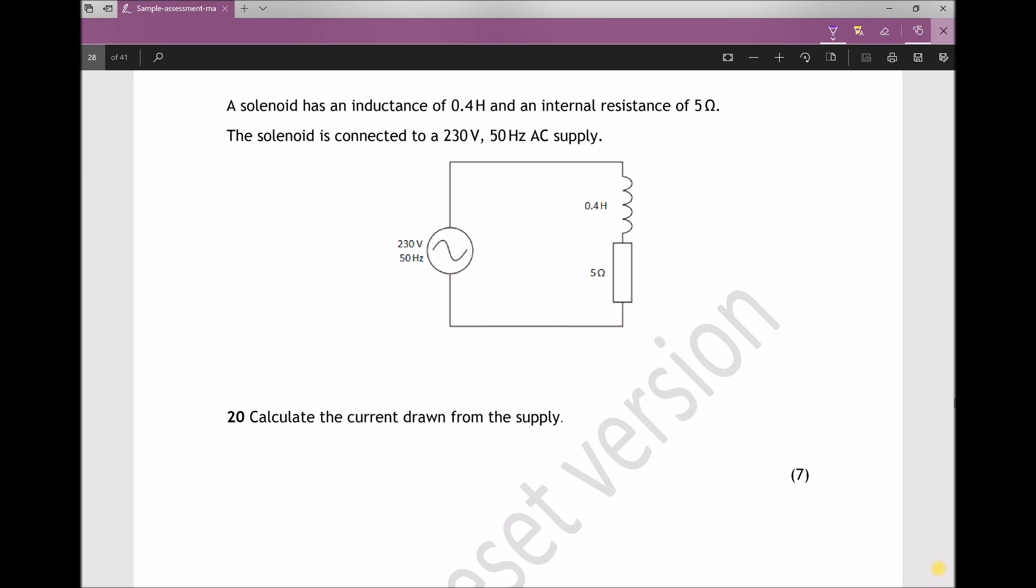Now you probably recall from Ohm's law that V equals IR, but when we have a circuit with both passive and reactive components, that equation becomes V equals IZ, where Z is the total impedance. Now if we want to calculate the current, which is I, we would need to divide each side of that equation by Z. So V over Z would give us the current.